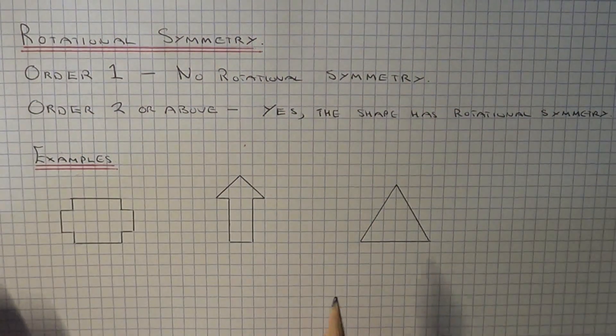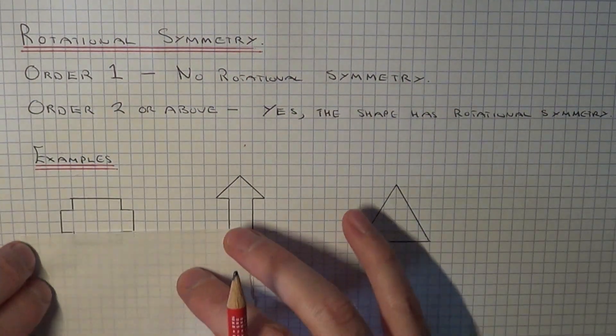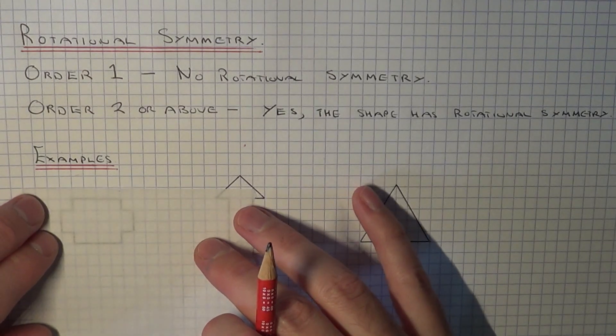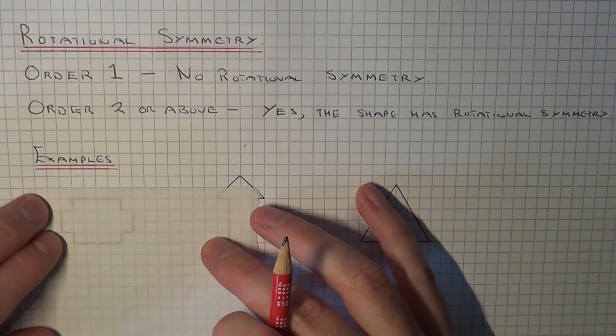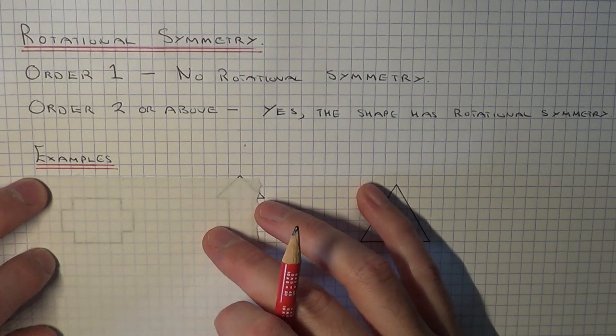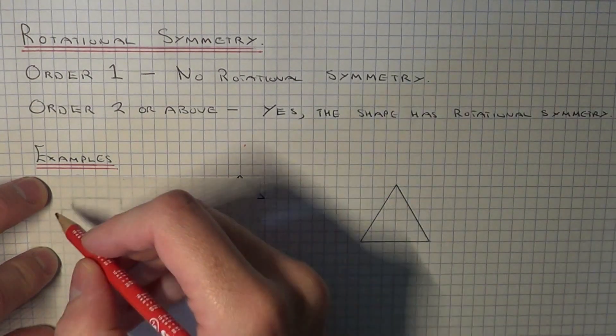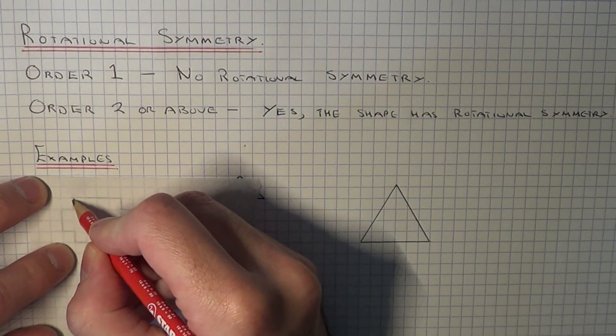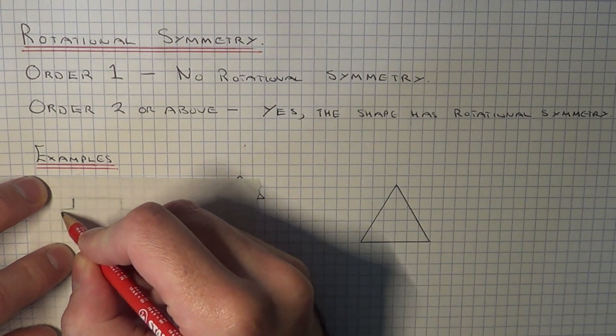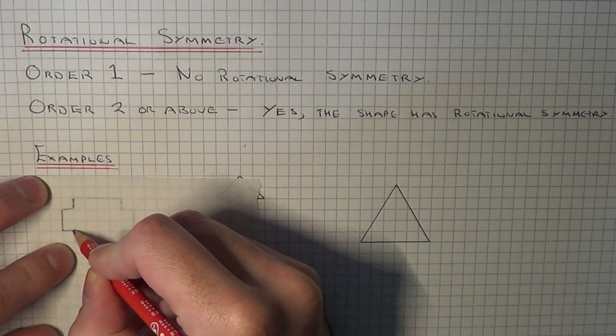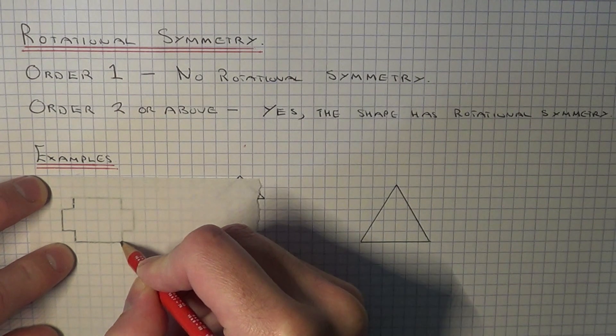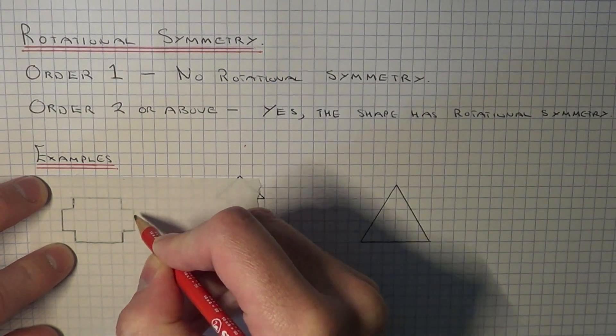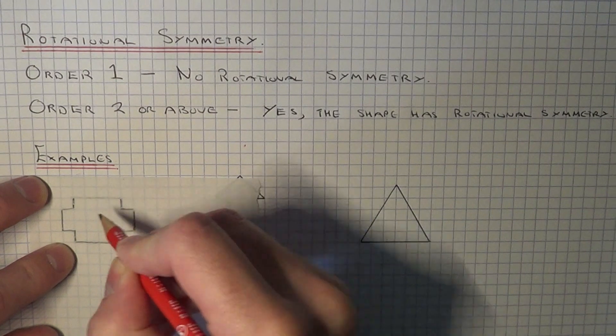Okay, so let's do example one. So if you notice, when I trace the shape, I've got my tracing paper upright on the page. So if you use a pencil to trace the shape, it doesn't have to be too neat, so you don't need to use a ruler.